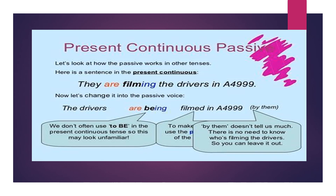Then we have the present continuous. For example: 'They are filming the drivers in A4999.' We begin with the object, which is 'the drivers.' There is a helping verb — 'are' — and 'the drivers' also takes 'are.' Whenever I have '-ing,' I drop it and add 'being,' then I put the past participle of 'film.' So: 'The drivers are being filmed in A4999 by them' — or we can drop 'by them.'